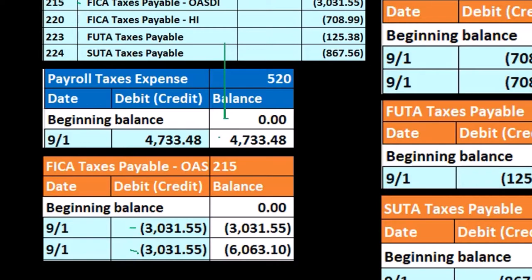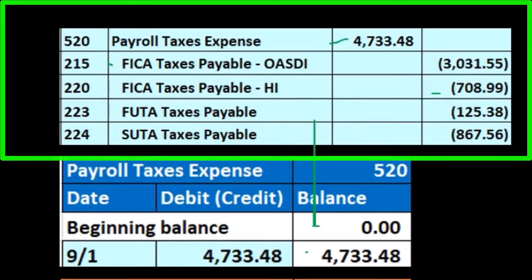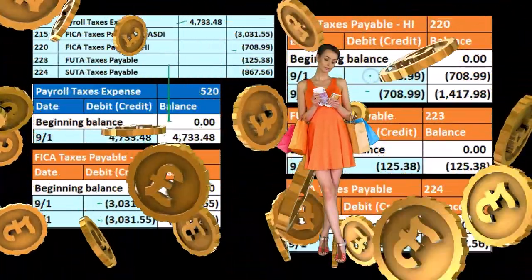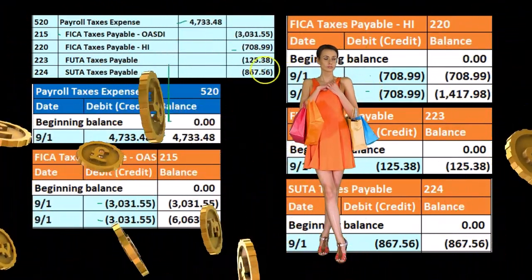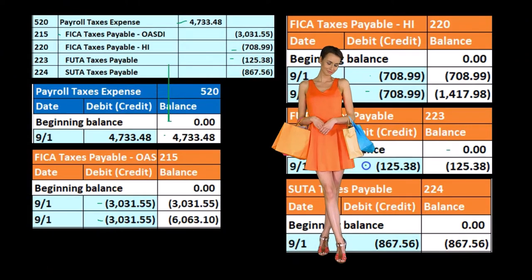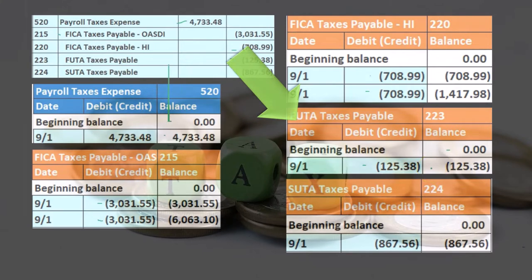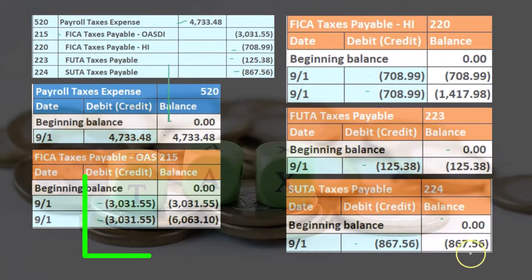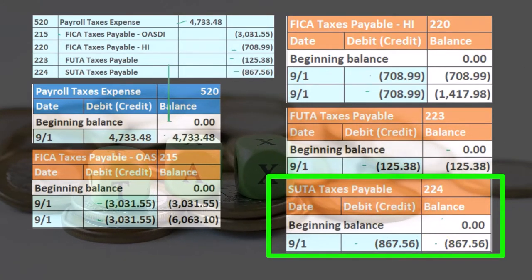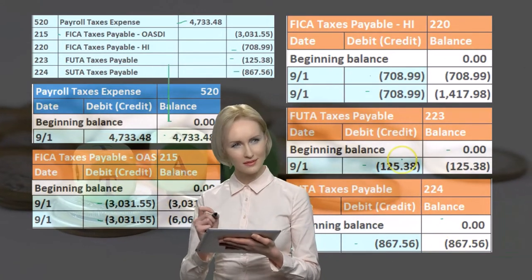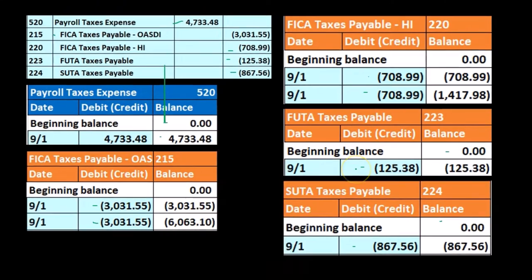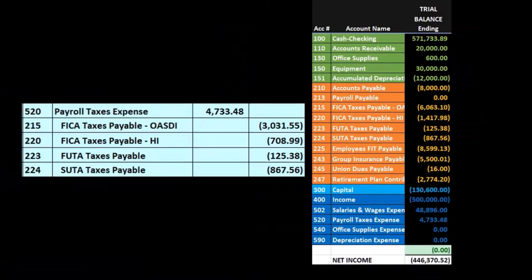For HI (Medicare), the account was at $708.99 representing the employee portion. We increase it by $708.99 in the credit direction to $1,417.98 — again representing both employee and employer portions. FUTA goes from zero up by $125.38 to $125.38 in the credit direction. SUTA goes from zero up by $867.56 to $867.56. FUTA and SUTA only have an employer component, so we don't see the doubling effect that we see with the FICA taxes.